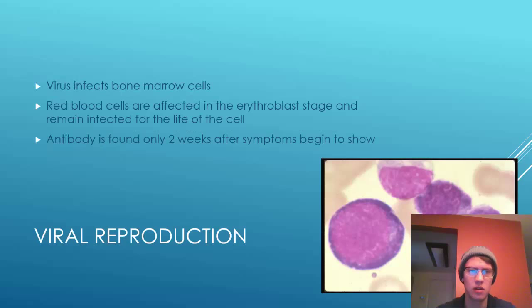The virus infects the bone marrow cells, and thus the red blood cells are affected in the erythroblast stage, remaining infected for the life of the cell. The antibody is found only about two weeks after symptoms begin to show.